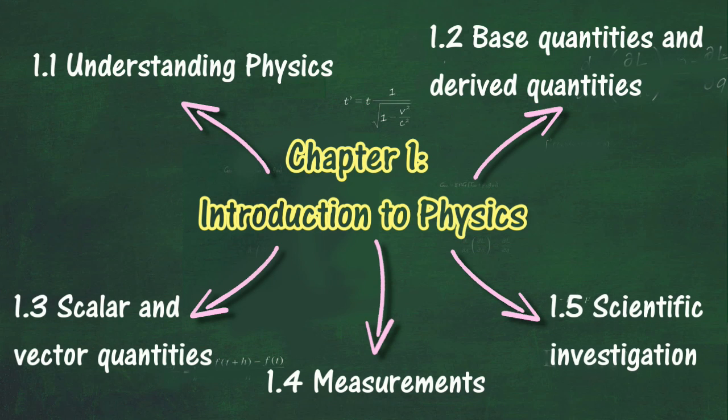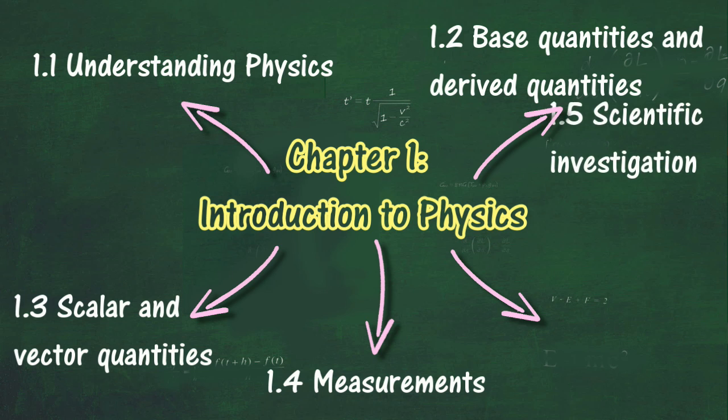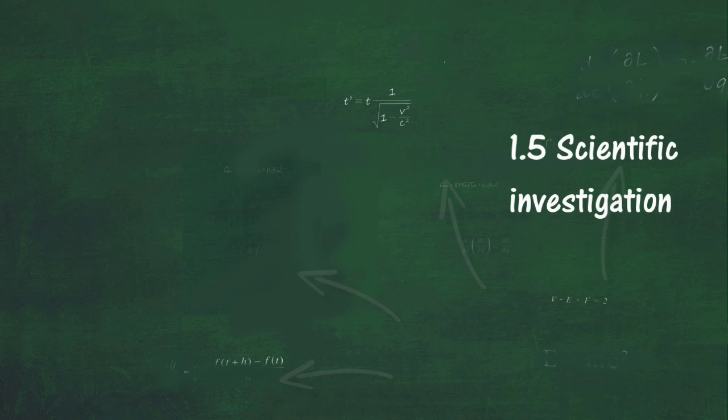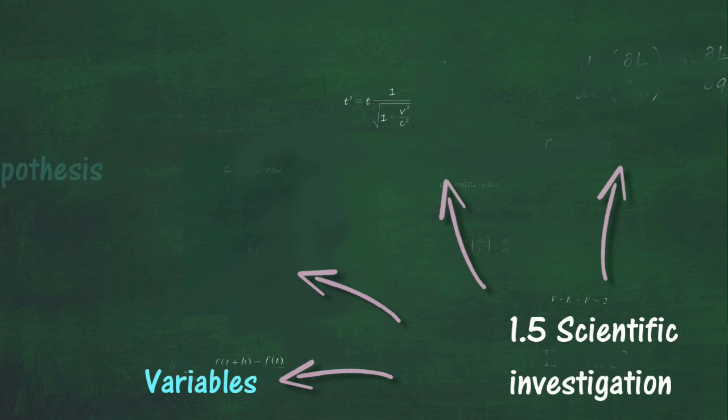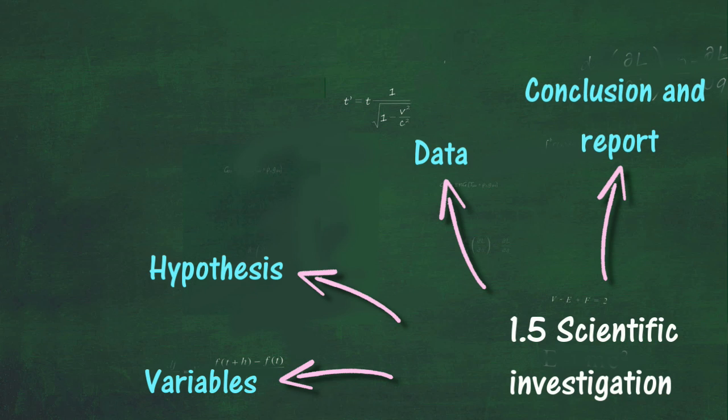At the end of this chapter, section 1.5, we will learn about scientific investigations. At the end of this section, you should be able to identify variables in a given situation, identify a question suitable for scientific investigation and form a hypothesis, design and carry out a simple experiment to test the hypothesis, record and present data in a suitable form, interpret data to draw a conclusion, and write a report of the investigation.